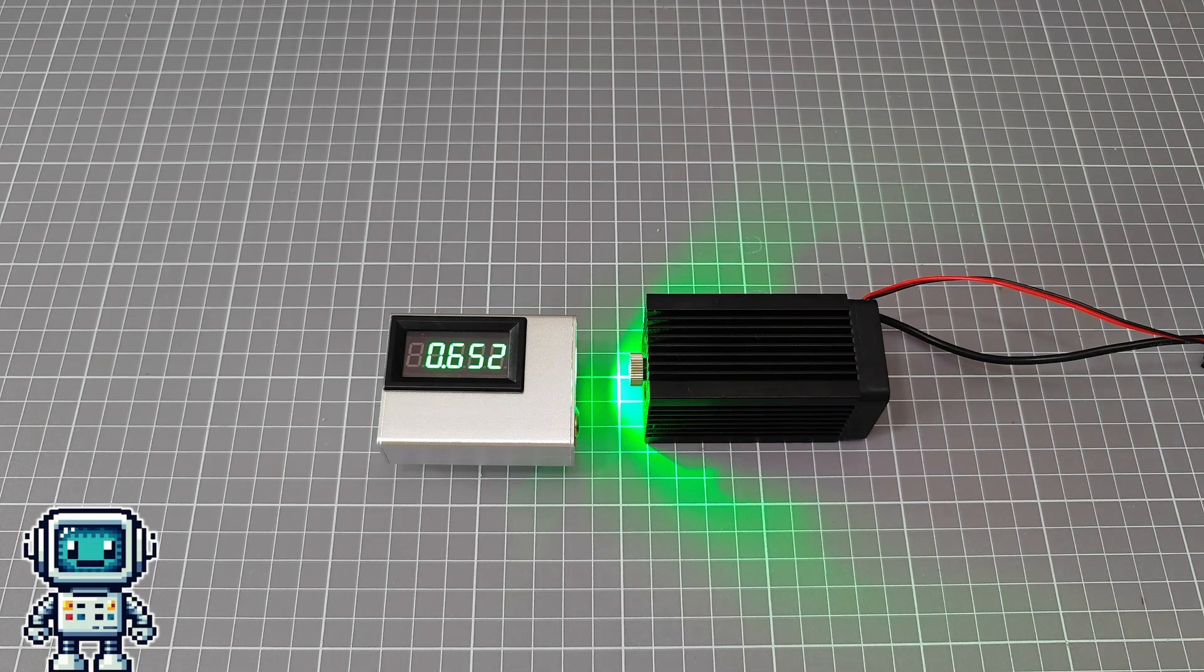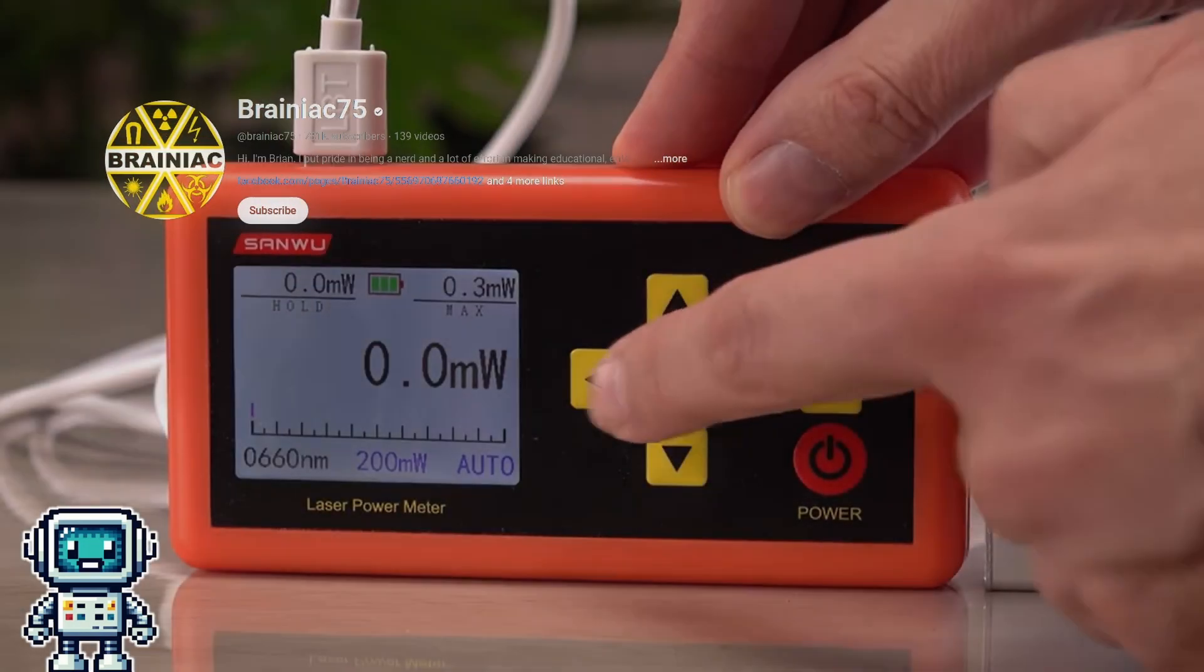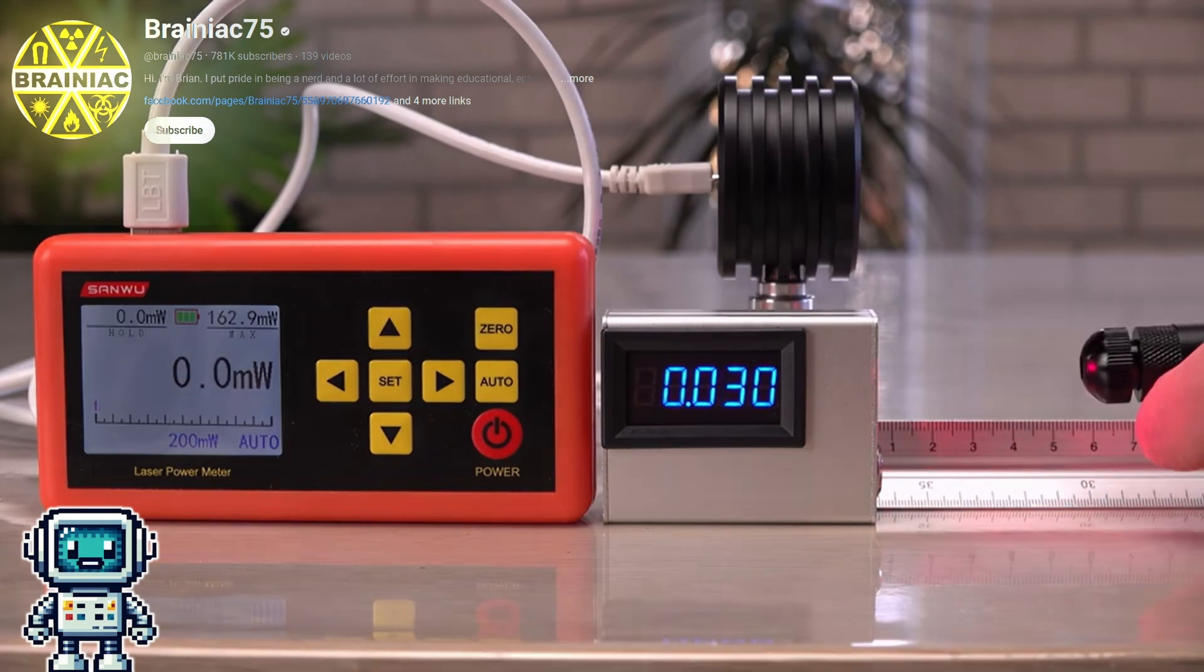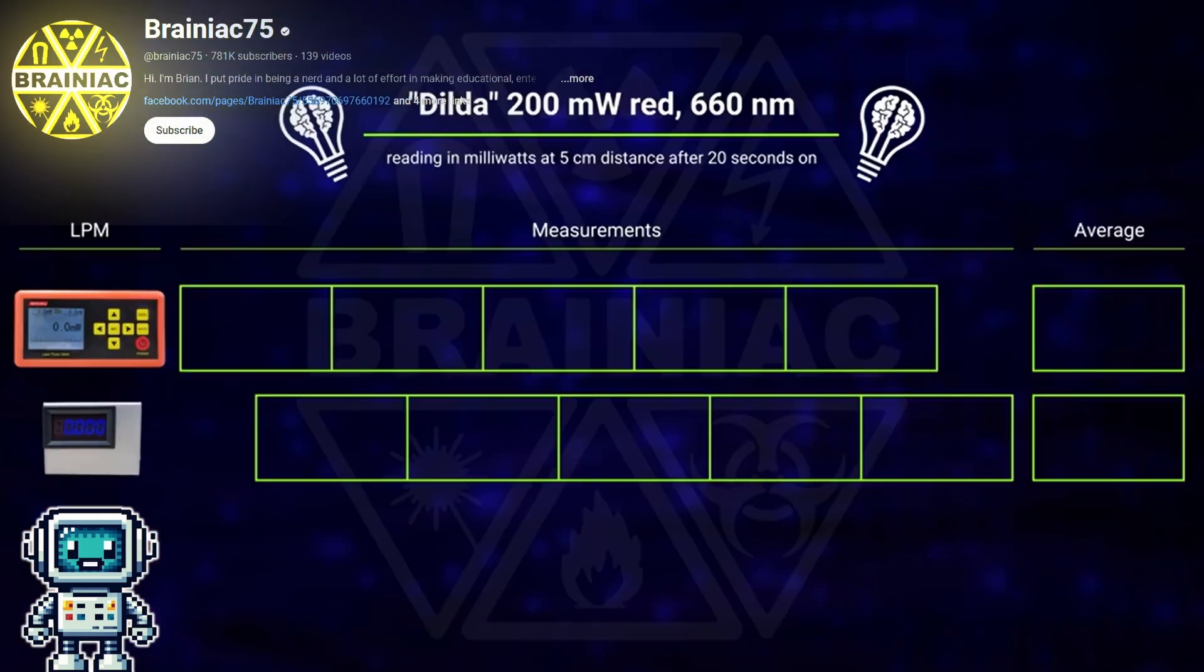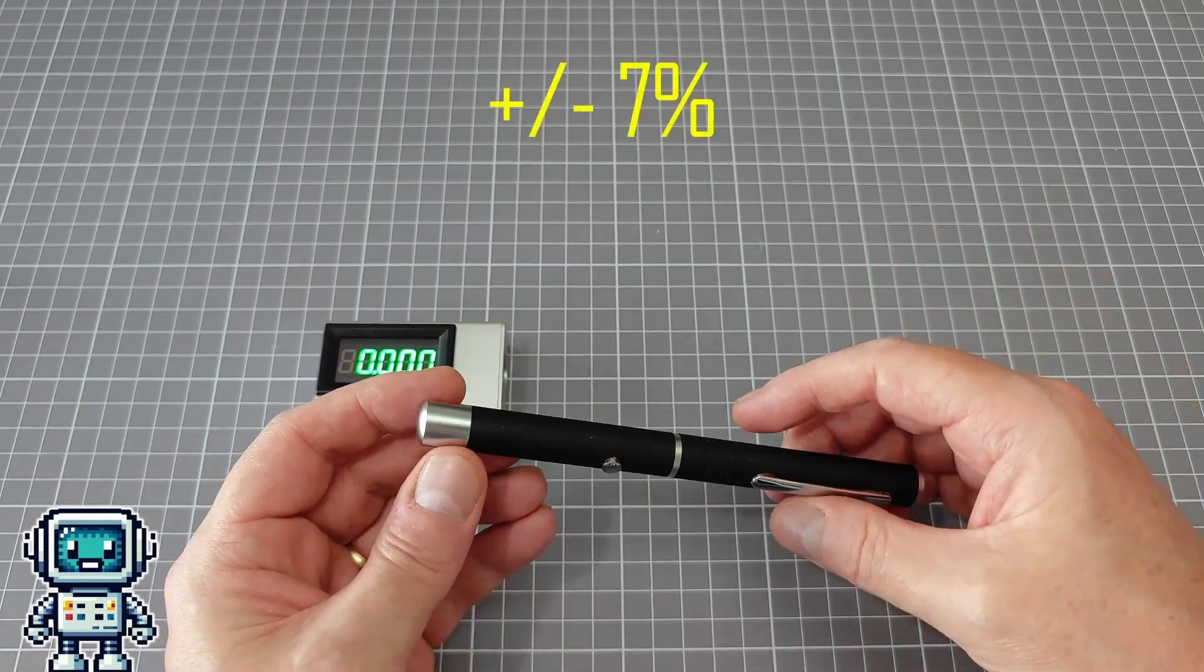However, what we do have is a secret weapon called Brainiac 75. This superhero YouTuber called Brian has already tested this power meter, and what Brian has is a calibrated laser power meter which he used to compare his results with. So what Brian found was that the results agreed within a tolerance of about 7% of his calibrated instrument.